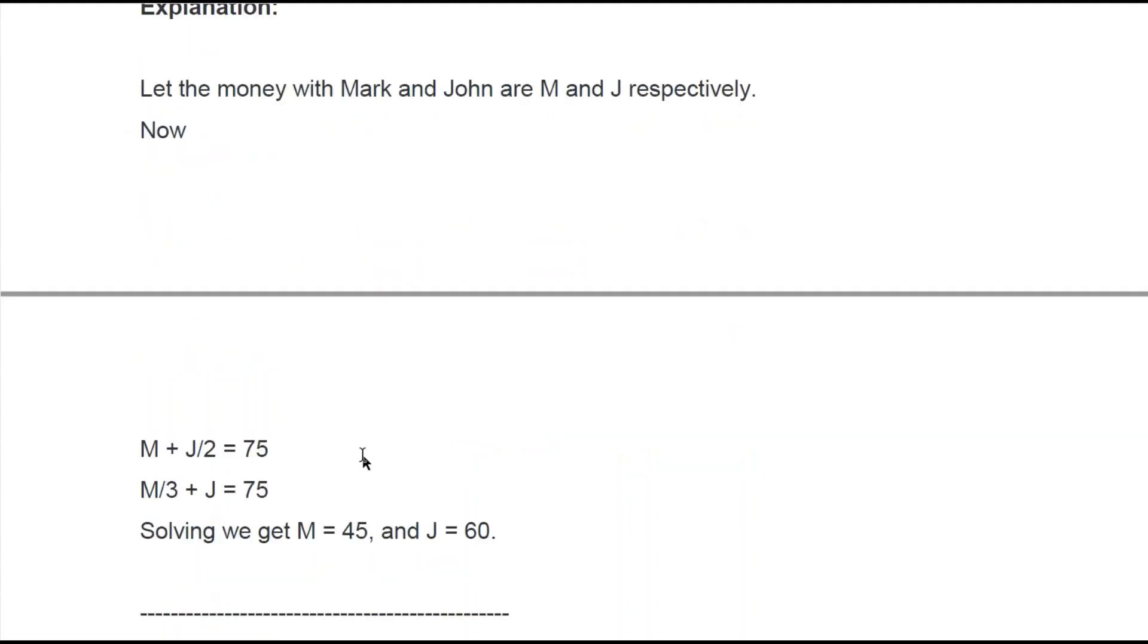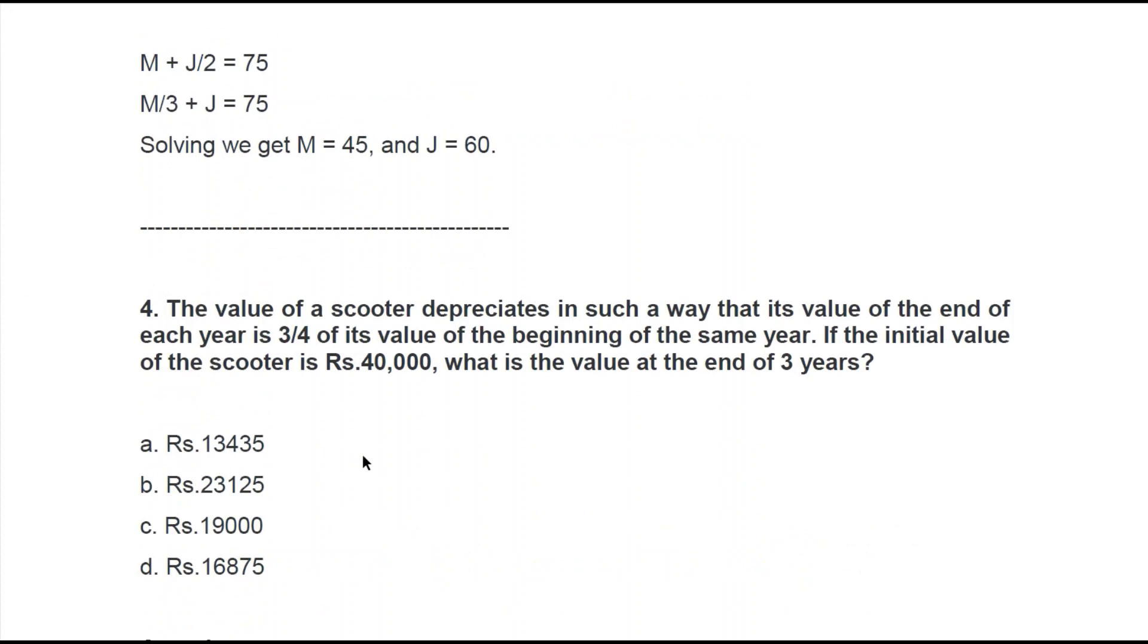Now moving on to the next question. The value of a scooter depreciates in such a way that its value at the end of each year is 3/4th of its value at the beginning of the same year. Now if the initial value of the scooter is 40,000, what is the value at the end of three years? Okay. As you can see, 3 by 4th value of the beginning of the same year. Here you will have to, I guess, multiply each time to get the new value.